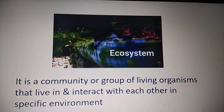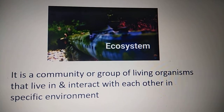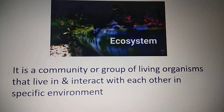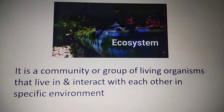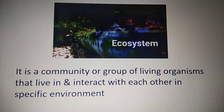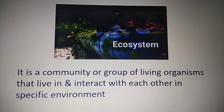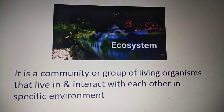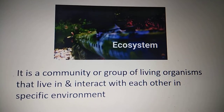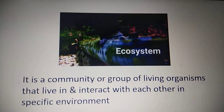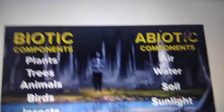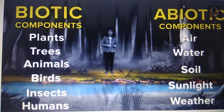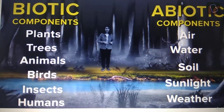Children, now we will go ahead and learn what is an ecosystem. It is a community or group of living organisms that live in and interact with each other in a specific environment. Ecosystem is a harmonious mix of natural environment and human environment.